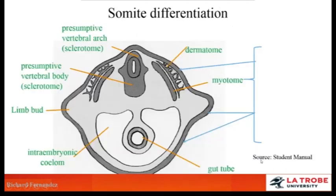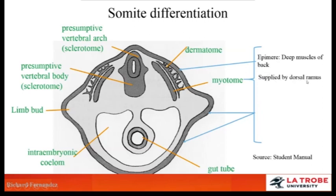In a cross-section of a developing embryo, we can see the somite development. The dorsal aspect shows the developing vertebra, where the sclerotome is forming the vertebral arch and vertebral bodies. The dermatome will develop into skin and the myotome into muscle masses. The epimere at the back is supplied by the dorsal ramus of a spinal nerve, while the hypomere — the anterolateral mass including the limb buds — is supplied by the ventral ramus.